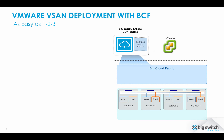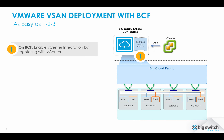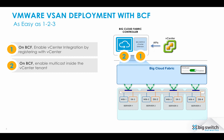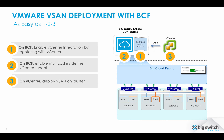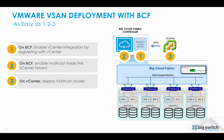The vSAN deployment process with Big Cloud Fabric is as easy as one, two, three. First, we enable vCenter integration on BCF, after which vSAN nodes are automatically attached to the Fabric. Then, we enable multicast on the Big Cloud Fabric tenant for vCenter with one simple knob. We then deploy vSAN inside vCenter. Note that as soon as VM kernel networking for vSAN is configured, the network is provisioned automatically.